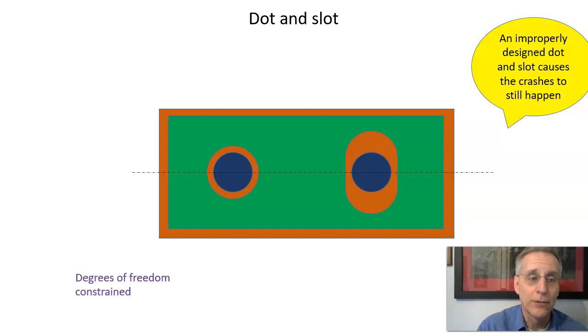If we look at the degrees of freedom that are constrained, the hole on the left is going to constrain these two translations. The hole on the right is going to try to constrain this translation. So again, we've got two features trying to constrain the same translation. The hole on the right is also going to try to constrain this rotation and it's not going to do a very good job of it.